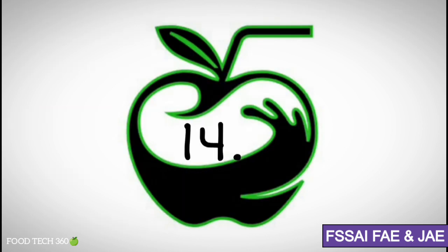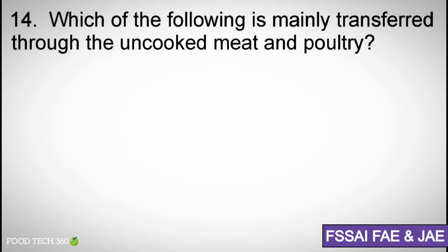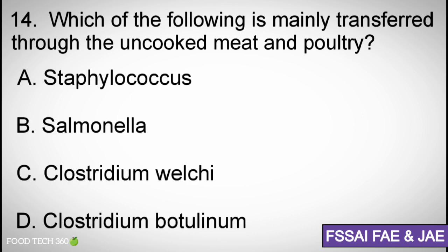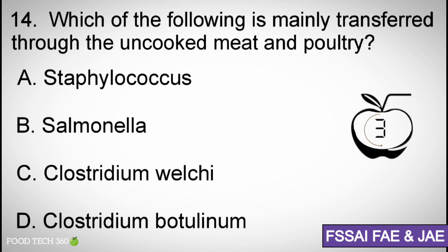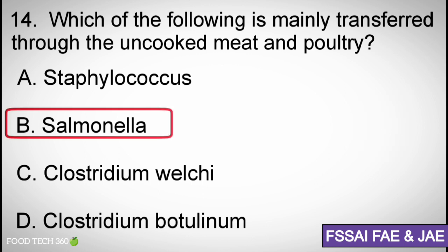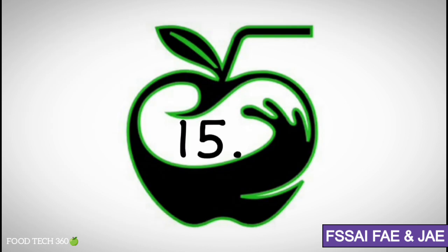Question number 14. Which of the following is mainly transferred through uncooked meat and poultry? A. Staphylococcus, B. Salmonella, C. Clostridium welchii, D. Clostridium botulinum. Correct answer: B. Salmonella.